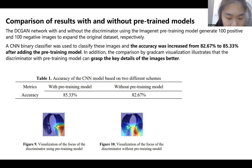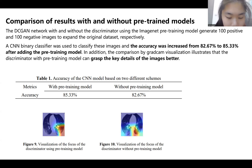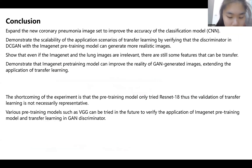For example, for the same image, the discriminator without the pre-training model focuses more on the white area at the edge, which is almost beyond the lungs. This experiment illustrates that even though ImageNet and lung pictures are unrelated, there are still some features that can be transferred and the weights of the pre-training model are still useful. It also demonstrates that transfer learning can improve the effectiveness of images generated by GAN, expanding the use of the ImageNet pre-training model.